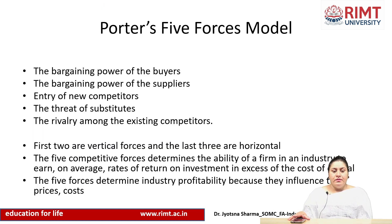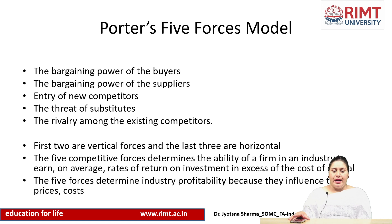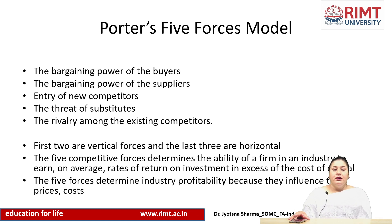Moving ahead in terms of industrial analysis, there is one major model which should be studied to keep the survival of an organization alive — Porter's Five Forces model. It talks primarily about five forces: number one, the bargaining power of buyers; number two, the bargaining power of suppliers; number three, entry of new competitors; number four, the threat of substitutes; and lastly, rivalry among existing competitors. The first two forces — bargaining power of buyers and suppliers — are the vertical forces, whereas the last three are the horizontal forces. The five competitive forces determine the ability of a firm to earn average rates of return on investment in excess of cost of capital, and they determine industry profitability because they influence price and cost.